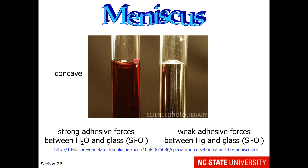The downward curving meniscus is called a concave meniscus, and you should have already seen this in lab and recognized to read from the bottom of the meniscus. An upward curving meniscus is known as a convex meniscus.